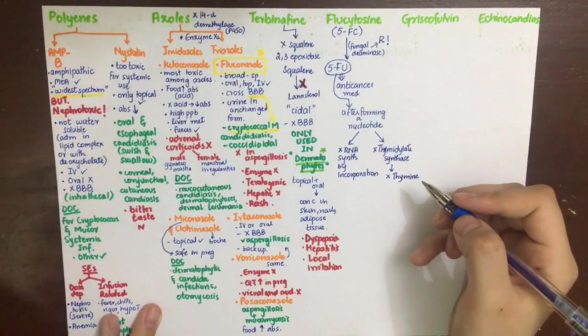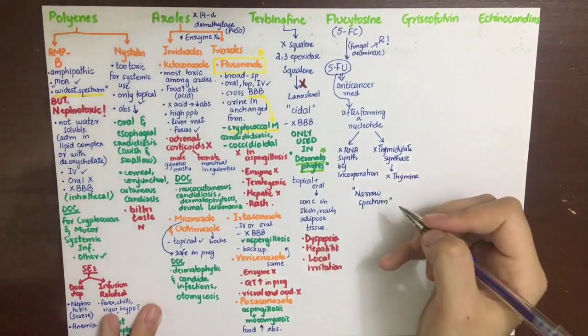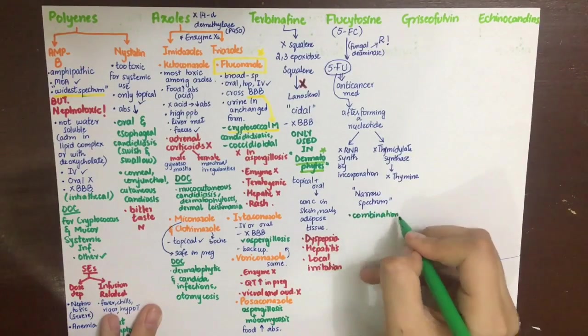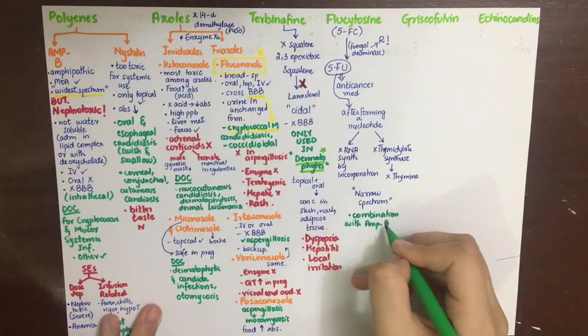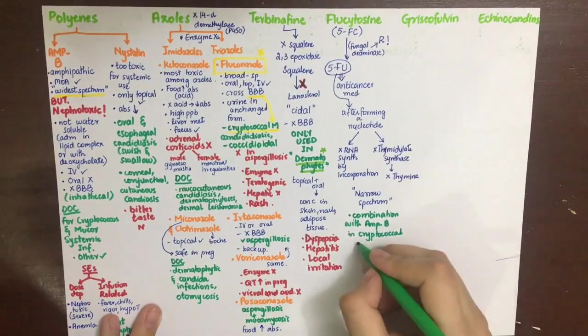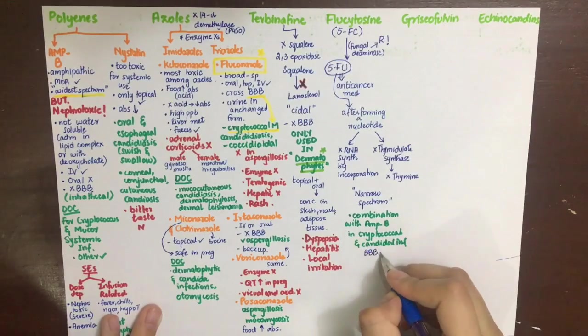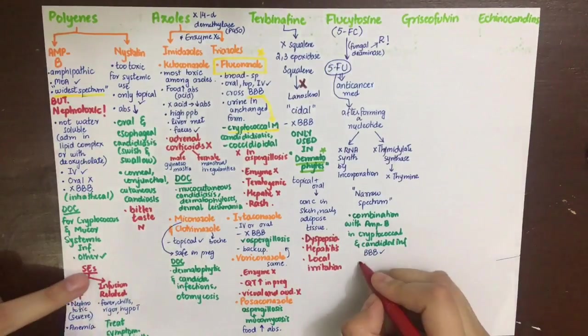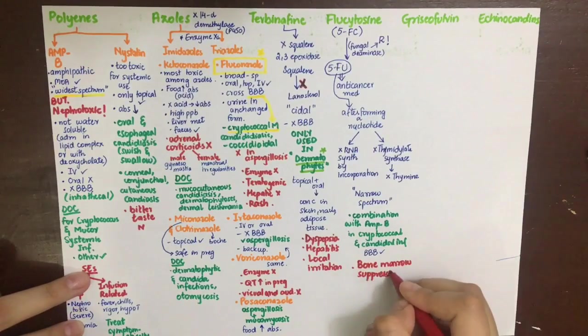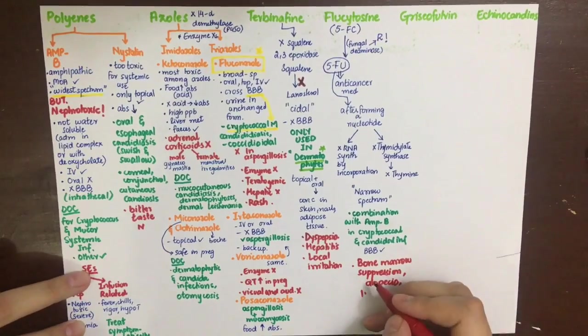Flucytosine has a narrow spectrum of antifungal activity. It is mainly used in combination with amphotericin B to avoid resistance, and in severe cryptococcal and candidal infections. It can cross the blood-brain barrier so it can be used in cryptococcal meningitis as well. Side effects include bone marrow suppression leading to thrombocytopenia, leukopenia, alopecia, and liver dysfunction.